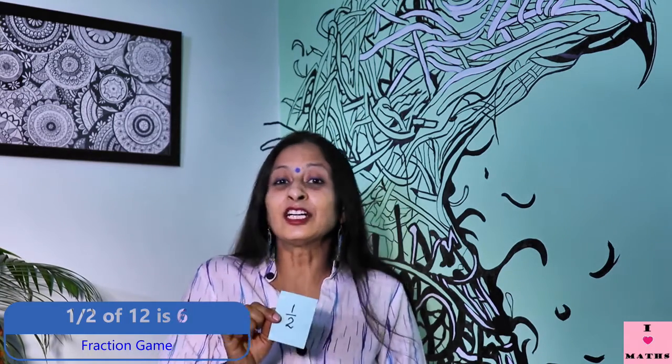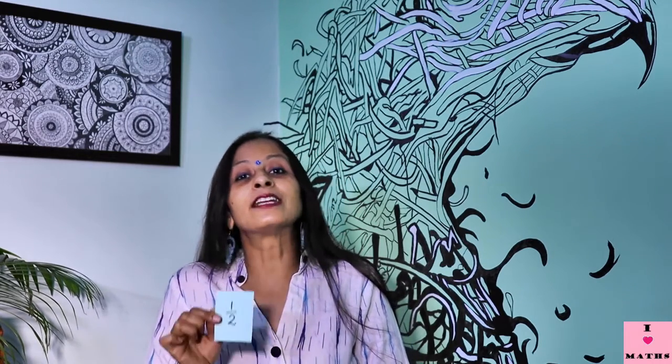All the 3 players will keep on picking the cards and whatever fraction is written on the card, they will color their circle according to the fraction. The person who is able to color the circle completely first will be the winner. So children, if you have your mother, father, brother, sister, then you can play with all of them. More people, more the merrier. It will be a lot of fun.